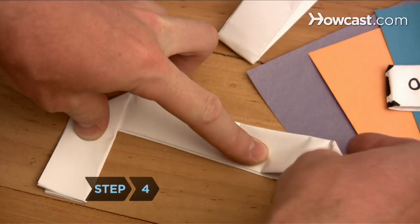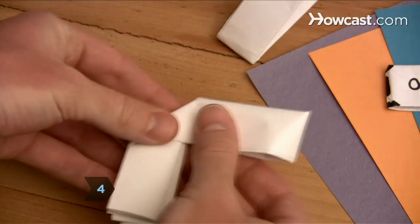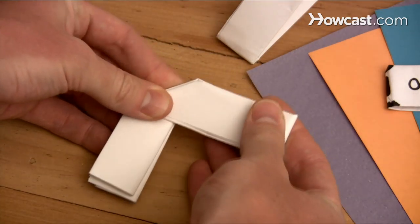Step 4. Fold this same sheet in half at the center of the 4-inch section. The two angled ends will now be aligned. This is the gun handle.